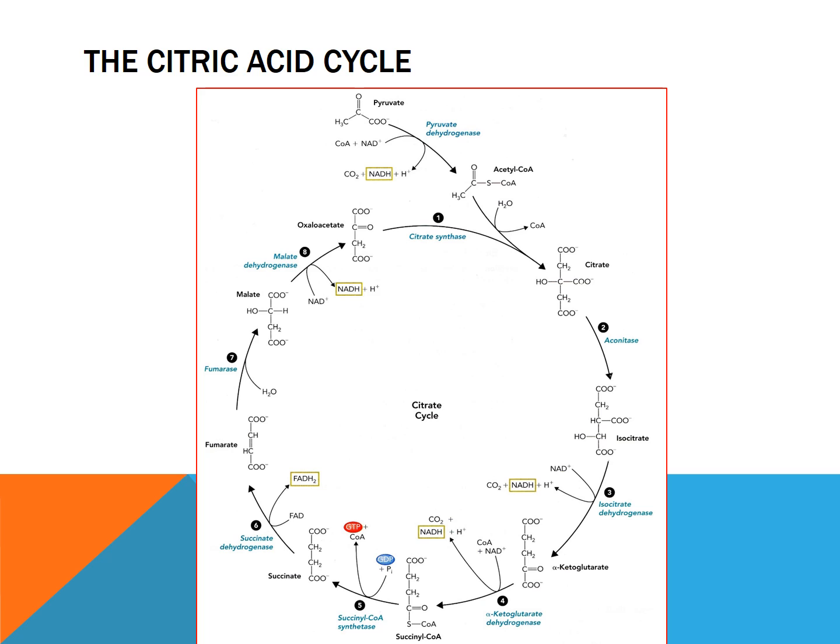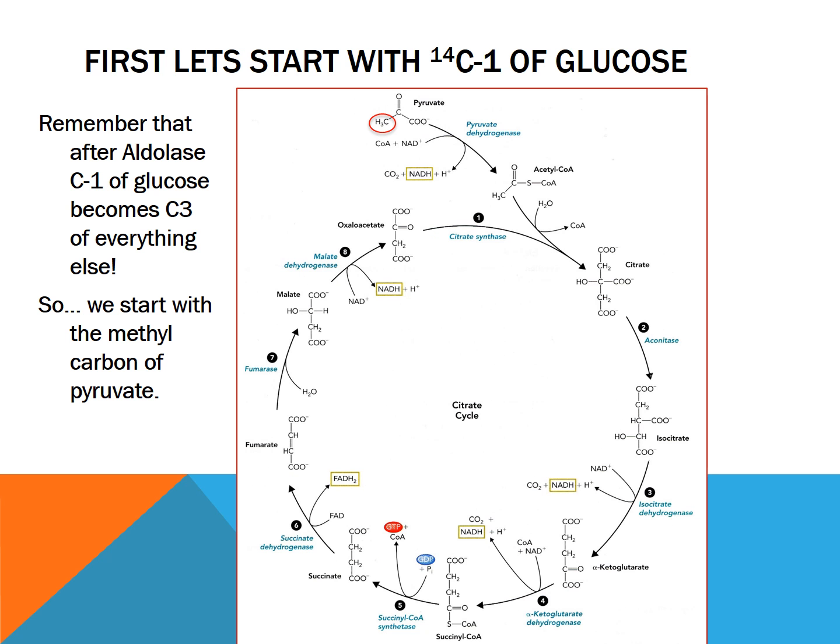Here is the whole citric acid cycle. You can see that from the top we start with pyruvate, pyruvate dehydrogenase occurs, and we get acetyl-CoA — that's how we start into the citric acid cycle when acetyl-CoA is then reacted with oxaloacetate to make citrate. First let's start with carbon one of glucose being radioactively labeled, which will then be the methyl carbon of pyruvate. Remember that the methyl carbon is carbon three of pyruvate, and after the aldolase splits, carbon one of glucose becomes carbon three of everything else.